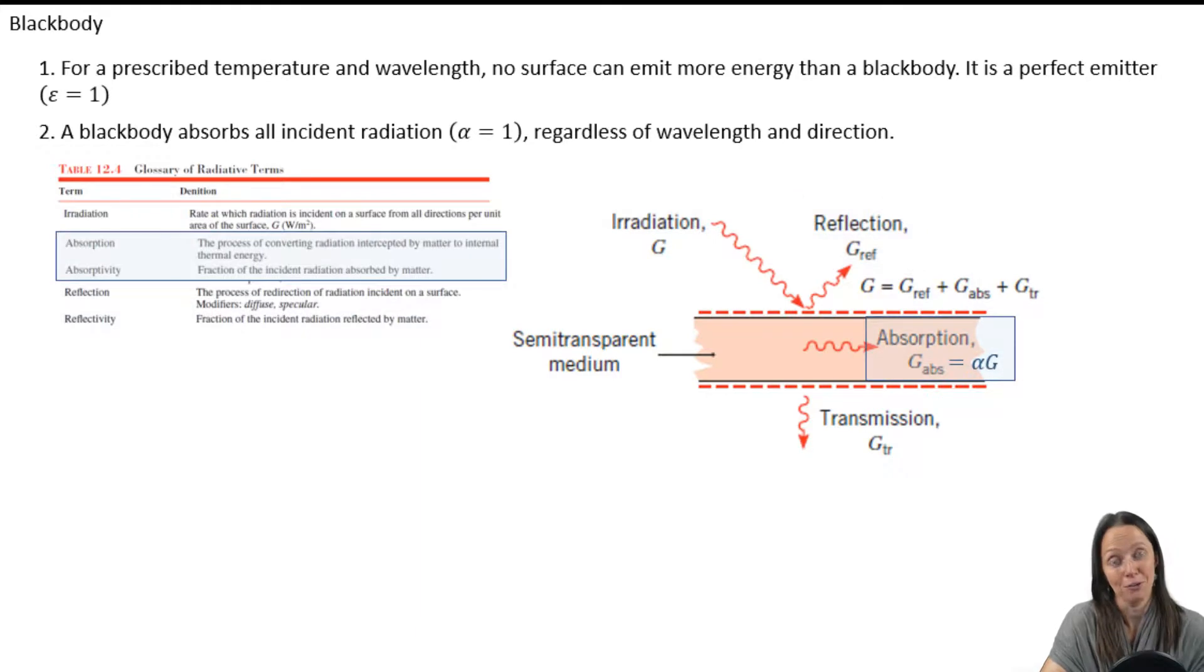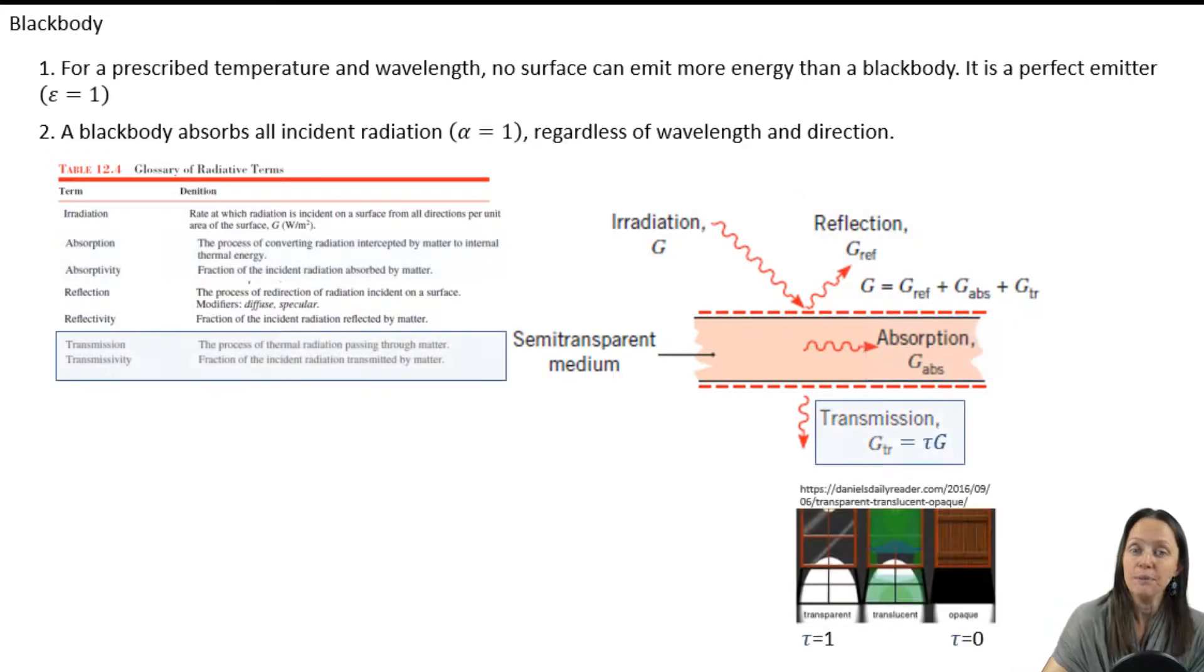It could be absorbed. And the fraction of irradiation that is absorbed is the absorptivity. And finally, it could be transmitted through a medium. And that fraction of irradiation that's transmitted is the transmissivity. For an opaque surface, that transmissivity is zero. And for a completely transparent surface, the transmissivity is one.